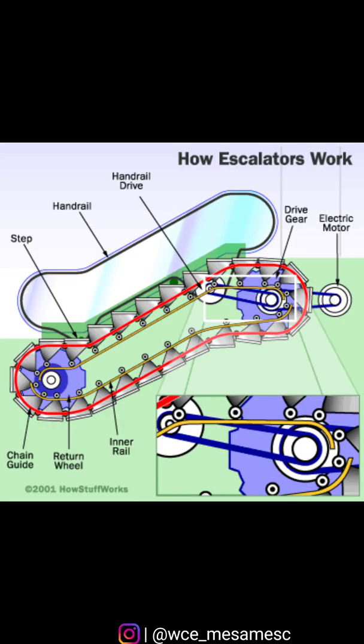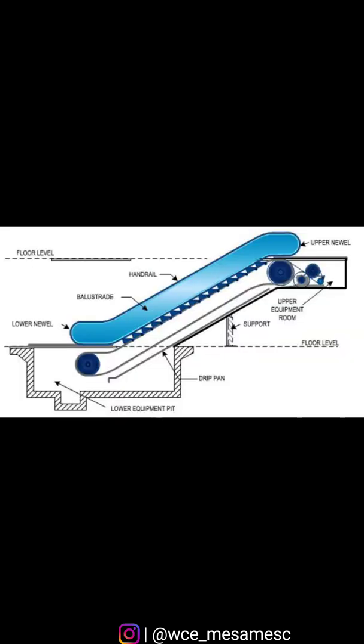An escalator is made up of a set of interlocking steps powered by an electric motor. A pair of chains loop around two pairs of gears and rotate to move the steps along, while a larger metal structure called a truss encases the entire mechanism to connect the floors.